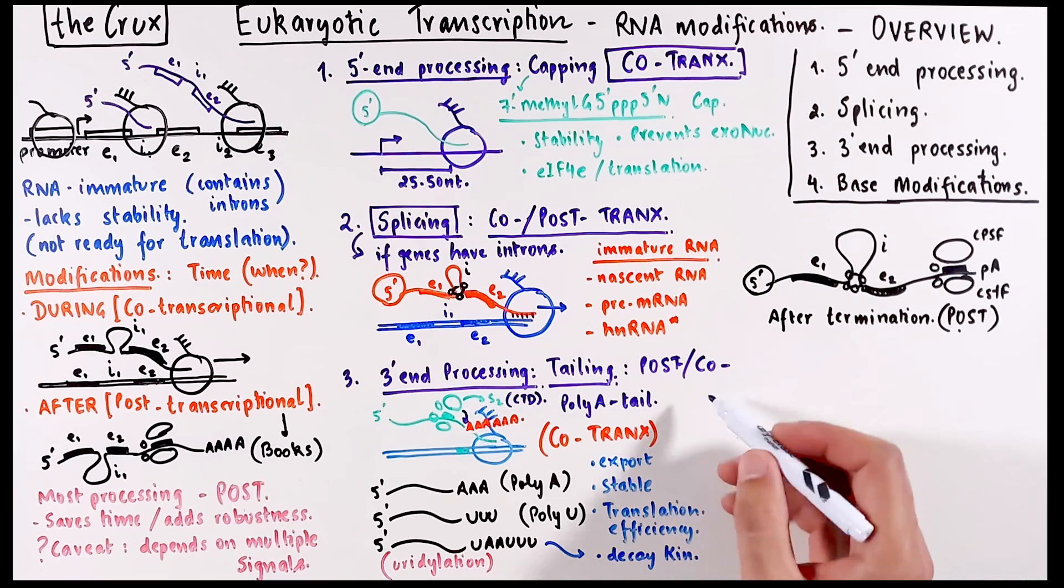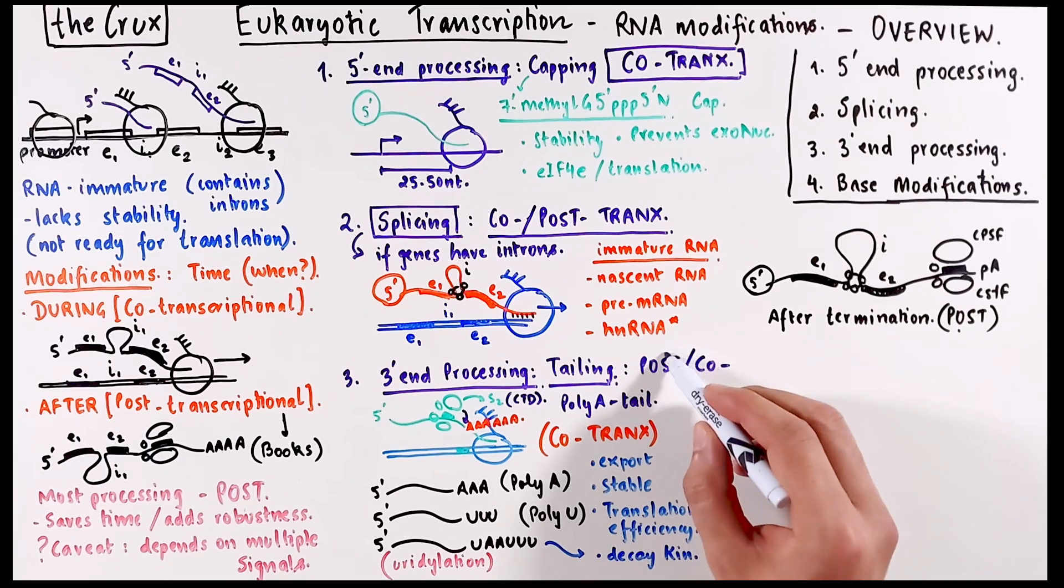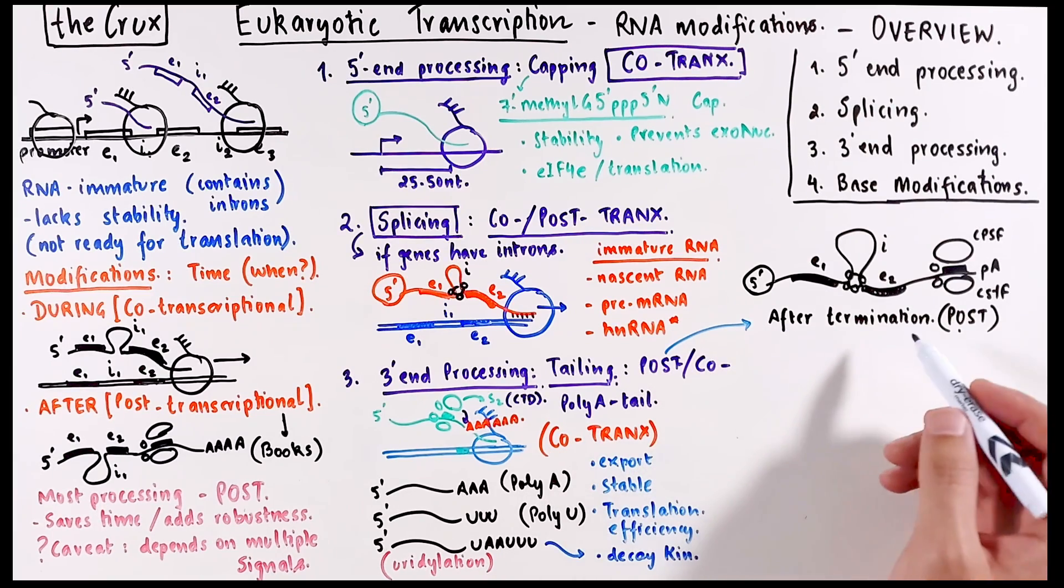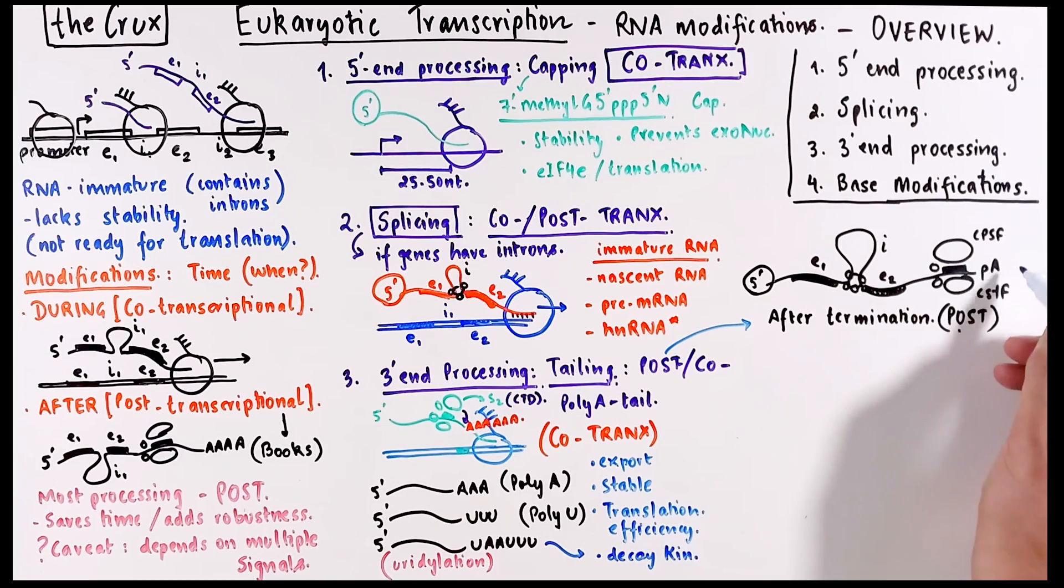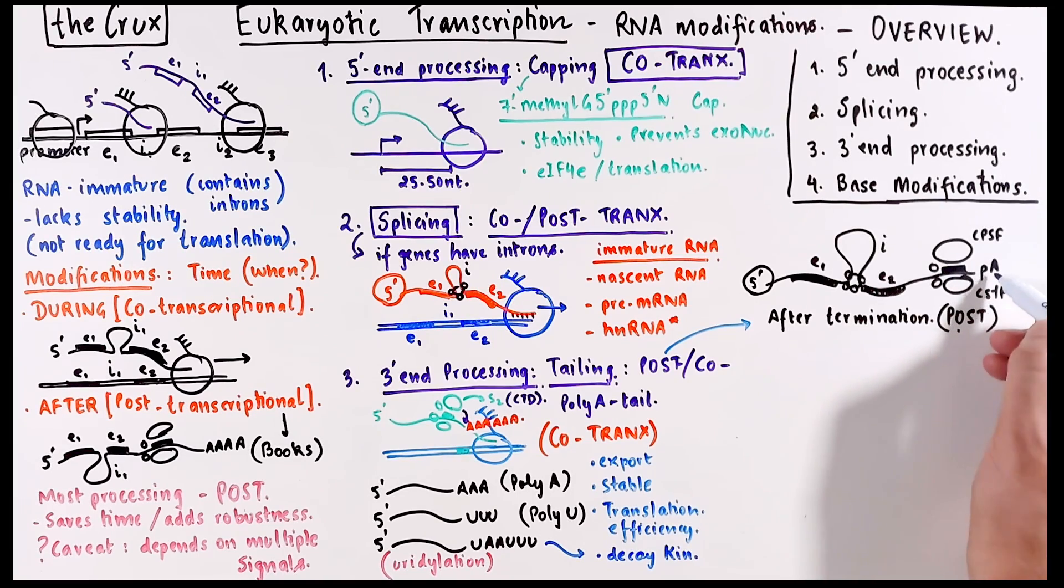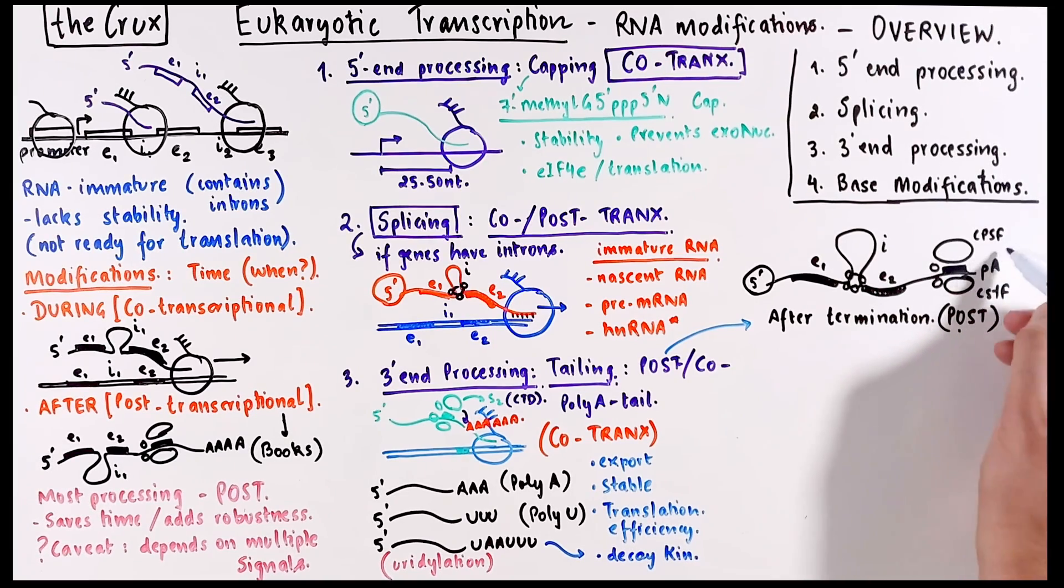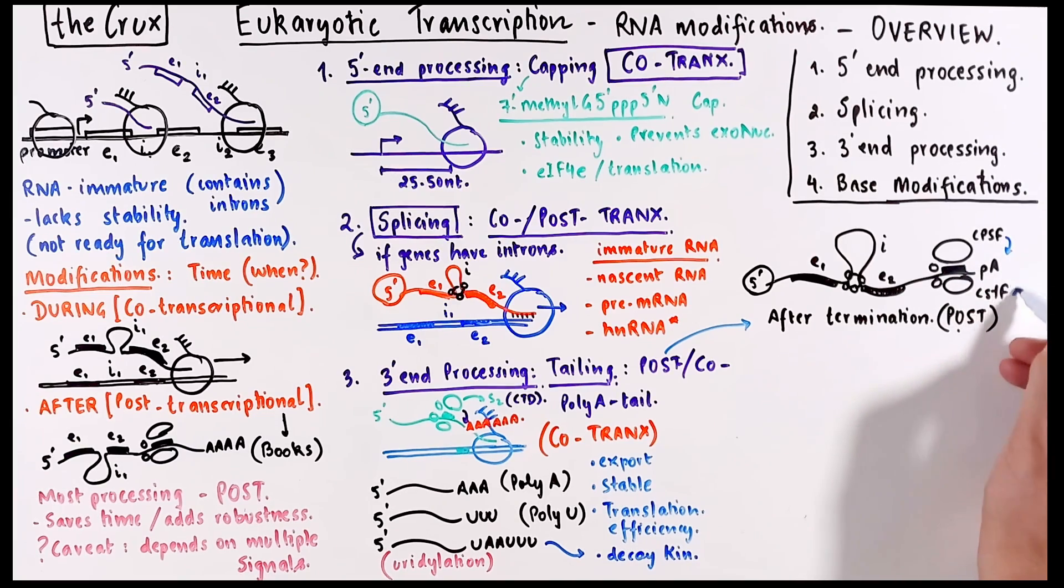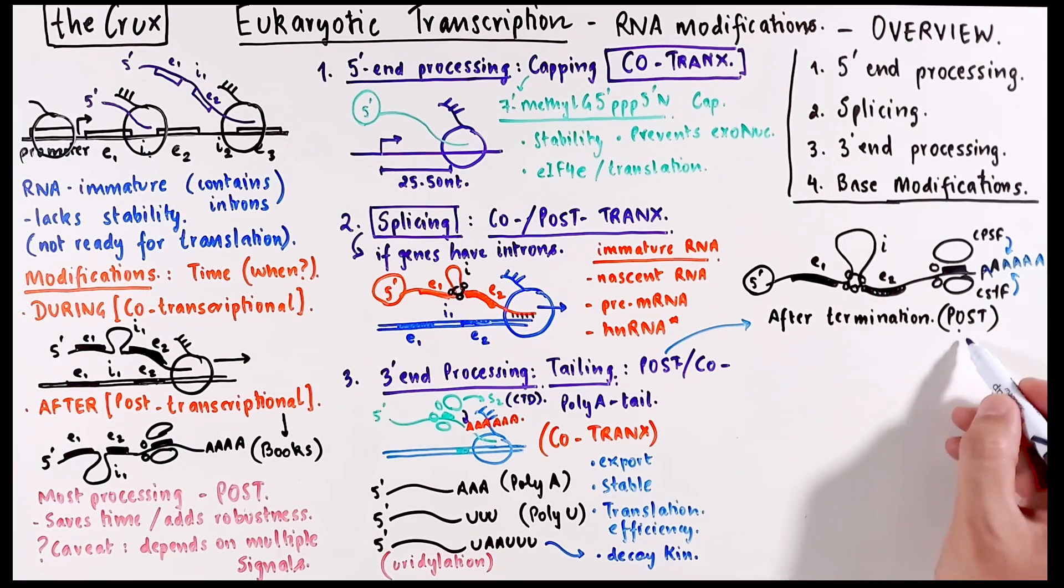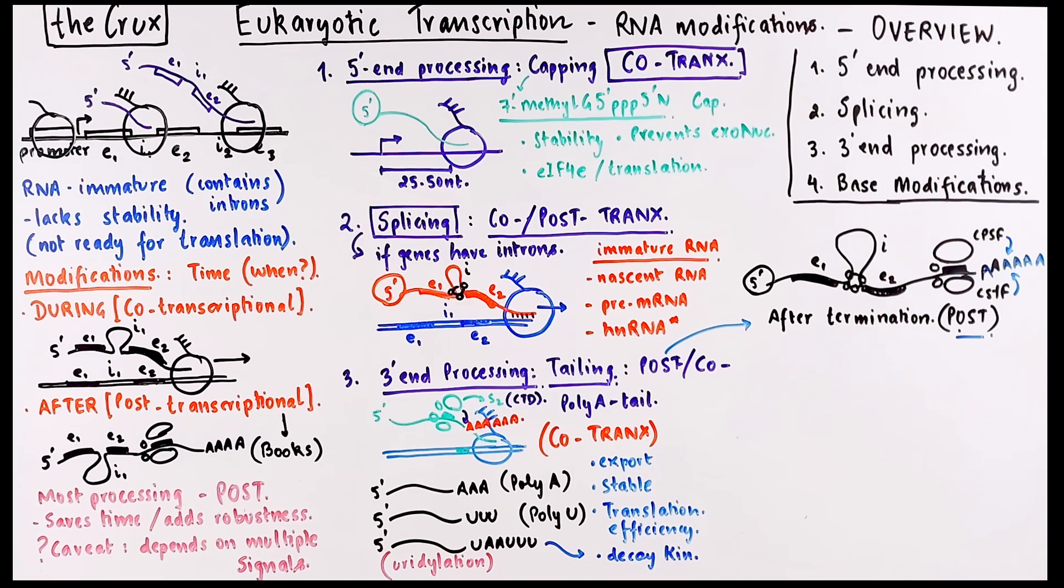Now that was co-transcriptional. And just as we saw with splicing, the tailing can also occur after cleavage when the RNA has separated itself from the moving RNA polymerase. And these CPSF and CSTF factors can recruit enzymes to add a poly-A tail. And keep in mind that multiple modifications, like splicing and polyadenylation, can occur simultaneously as well. They're not necessarily exclusive in nature.